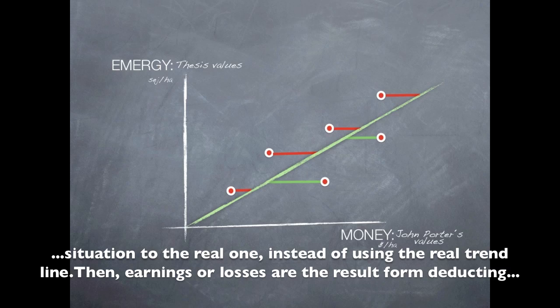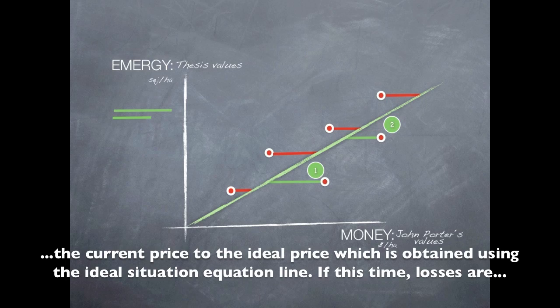Then, earnings or losses are the result from deducting the current price to the ideal price, which is obtained using the ideal situation equation line.